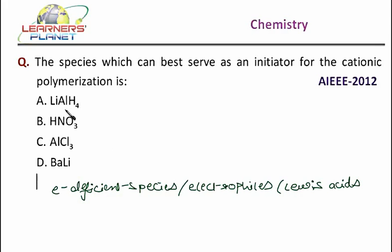Of the given options, say if I am taking LiAlH4, that is lithium aluminium hydride, it is not an electron deficient species. It gives out hydride ion. So it is not the correct option.